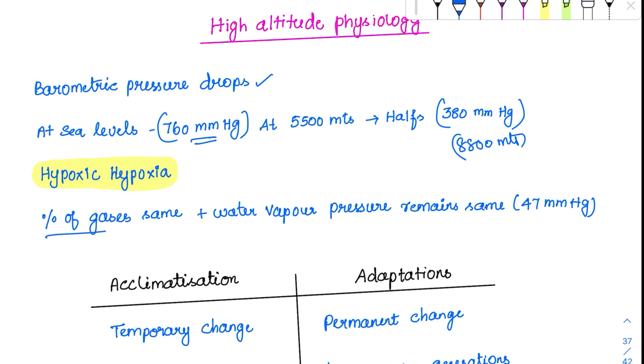The percentage of gases remains the same at high altitude - 21% oxygen both at sea level and high altitude. But the overall quantity is reduced. Dangerously, water vapor pressure remains at 47 mmHg. When subtracted from 760, it's a small decrease, but from 300, it takes a major chunk, so oxygen availability drops significantly.